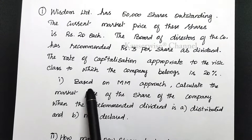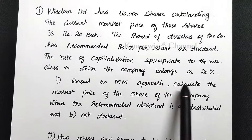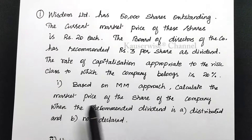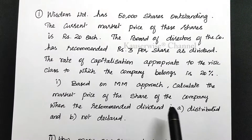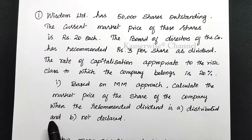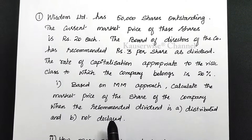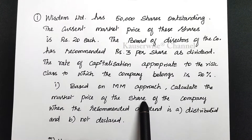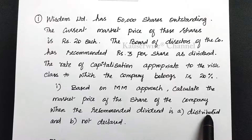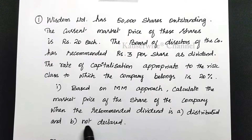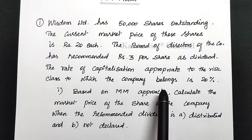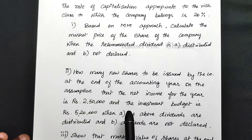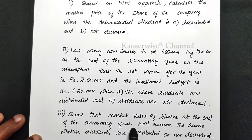With this information, they are asking you to calculate three things. Number one: based on the MM approach, calculate the market price of the share when the recommended dividend is distributed, and when the dividend is not declared. This is the first case. After finding this, we can go for the second and third calculations.